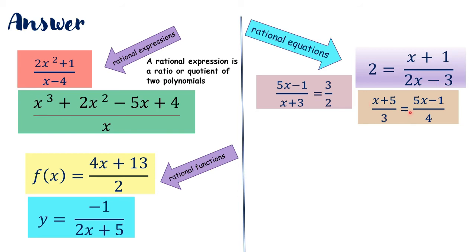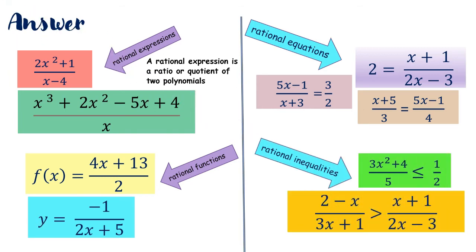You have x plus 5 all over 3 is equal to 5x minus 1 all over 4 — two sides of rational expressions. In the rational function, you have a rational expression on one side, and f of x or y on the other side. The last grouping is called rational inequalities, signified by the inequality sign — less than or equal to, or greater than — separating one rational expression from another.